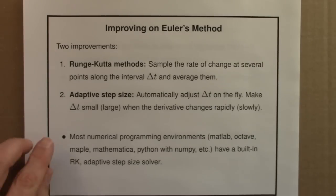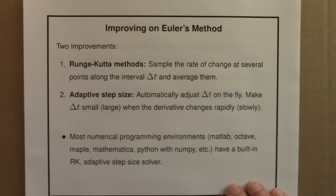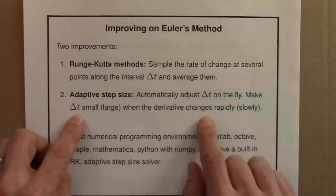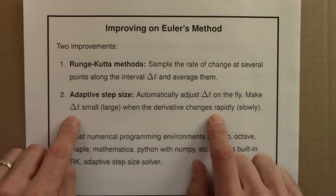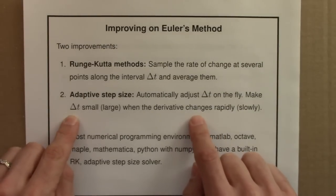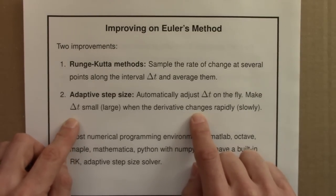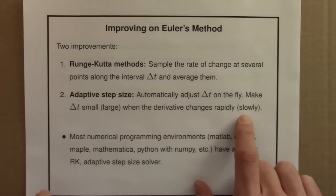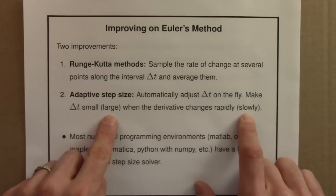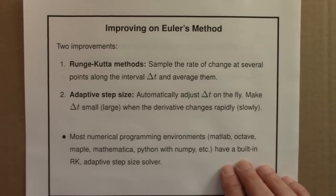The other thing that one typically does is something called adaptive step size. The idea is to have the program automatically adjust delta t on the fly as it's trying to find the solution. Delta t needs to be small when the derivative is changing rapidly. We get into trouble with these methods when we pretend the derivative is constant over delta t but it actually changes a lot. So if sometimes the derivative is changing rapidly and other times it's not, we don't need to use the same delta t. If the change in derivative is slow, we can use a large delta t; when it's fast, we need a small delta t. These adaptive step size methods figure that out on the fly.